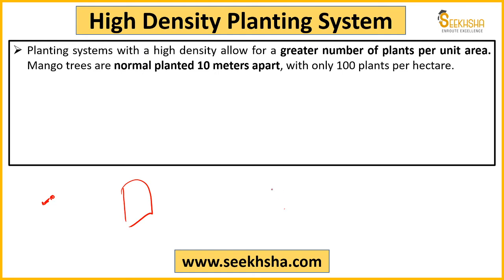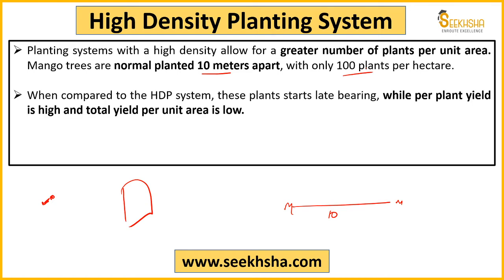Normally, the distance between two mango plants is 10 meters. So a 10-meter gap is maintained between two mango plants. In that case, in 1 hectare you can plant roughly only 100 plants. When we talk about high density planting, that number increases significantly.